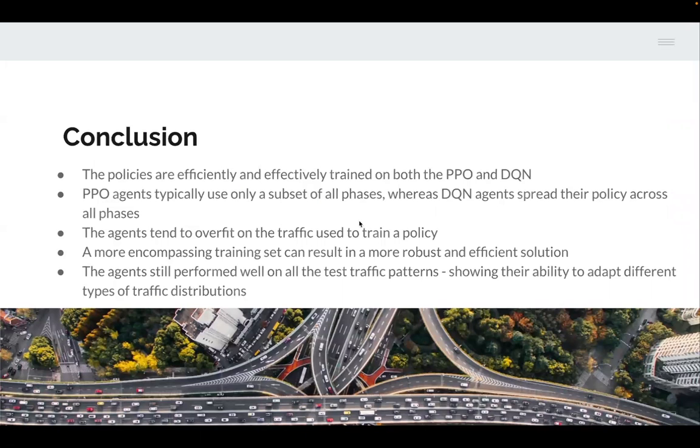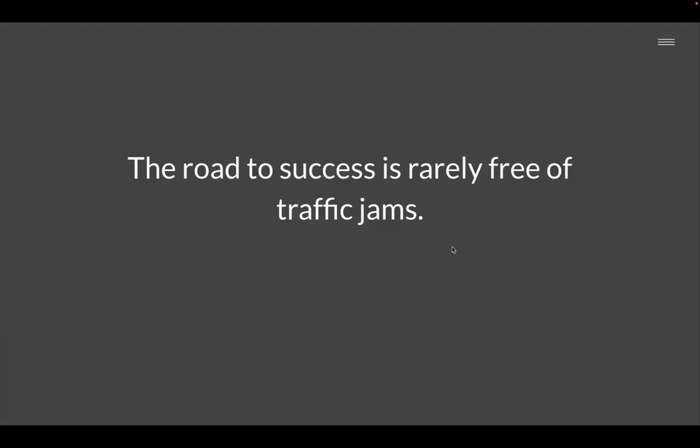We show that both DQN and PPO are capable of efficiently and effectively training good-performing policies. As I said, the PPO agent typically only uses a subset of all phases, whereas the DQN has a wide spread in its policy over all phases. The agents tend to overfit on the traffic they're trained on, and we observe these artifacts when we test the agents on different test traffic. But we believe a more encompassing training set can result in a more robust and efficient solution. The agents still perform well on all test traffic, showing the ability to adapt to different types of traffic distributions.